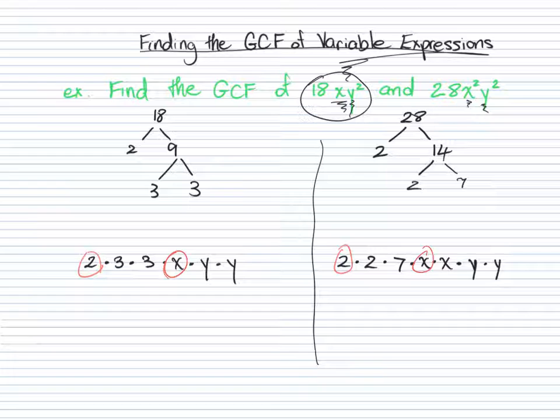And there are 2 y's in both of our lists, so those are common to both expressions. So now we've circled everything that's common to both expressions, and now we can write our GCF.